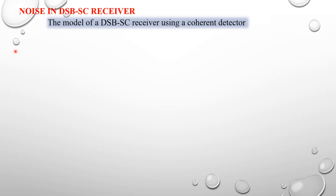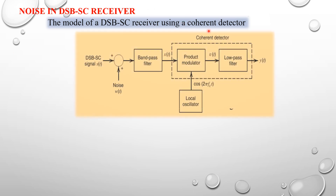Noise in DSBSC receiver: the model of the DSBSC receiver uses a coherent detector. This is the block diagram of the DSBSC receiver. It consists of the DSBSC signal s(t) and unwanted signal noise w(t), a band-pass filter, a coherent detector — which itself consists of a product modulator and